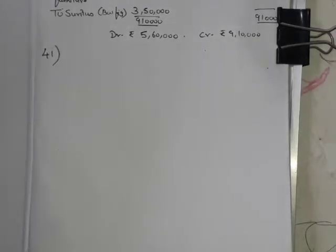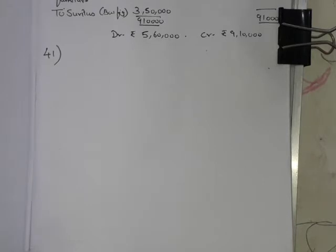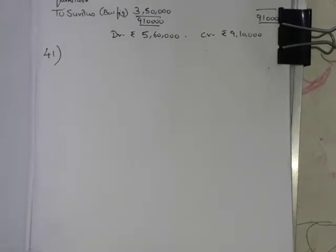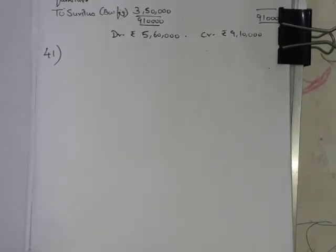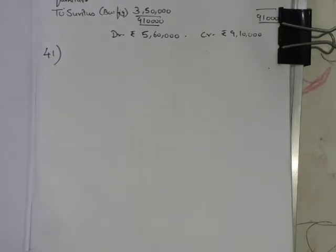The next item is donation for building fund. General donations you can take, but this donation is specifically for building purposes — that makes it a specific donation. Specific donations should not be taken into account for income and expenditure computation; they go to your balance sheet. Only general donations can be taken for calculation purposes.